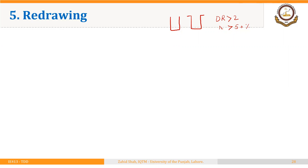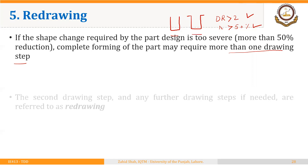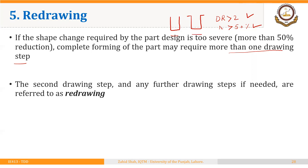Welcome back. During our discussion on deep drawing, we are assuming axisymmetric shapes. Now, if the drawing ratio turns out to be greater than 2, or reduction turns out to be greater than 50 percent, then we may have to perform more than one drawing operation in order to make the shape. So if the shape change required is too severe, complete forming of the part may require more than one drawing step. The second drawing step and any further steps, if needed, are referred to as redrawing.